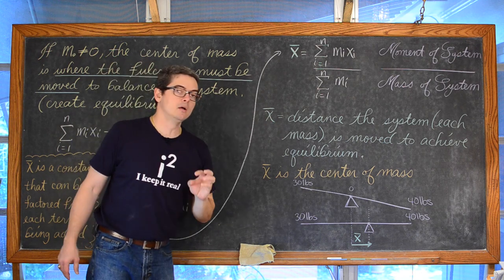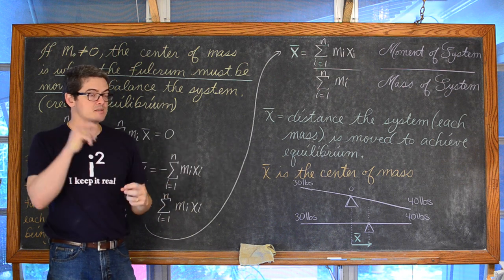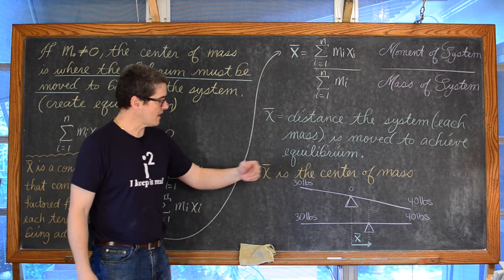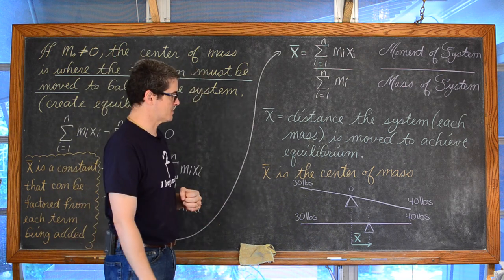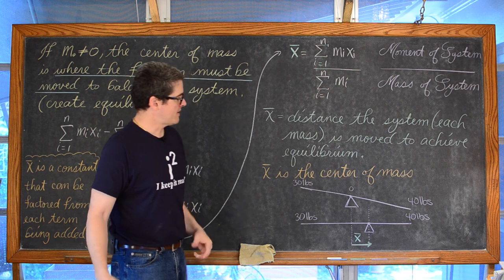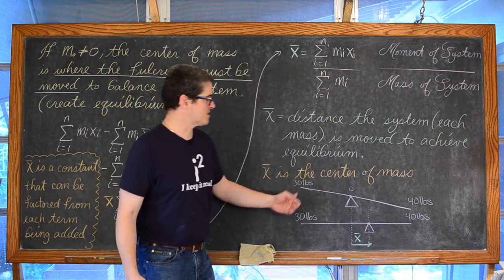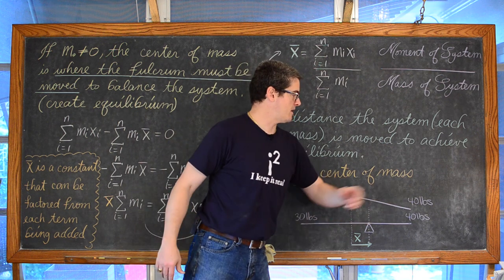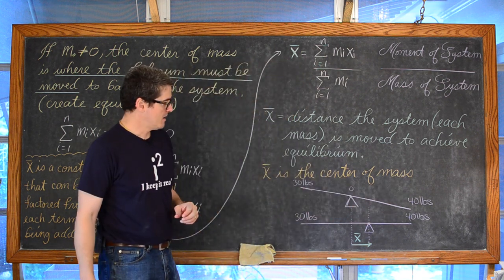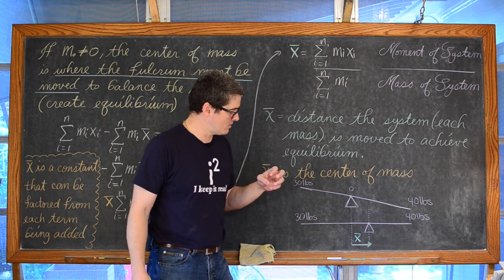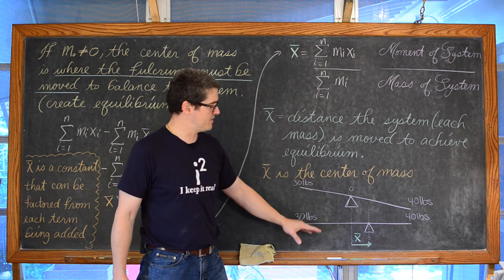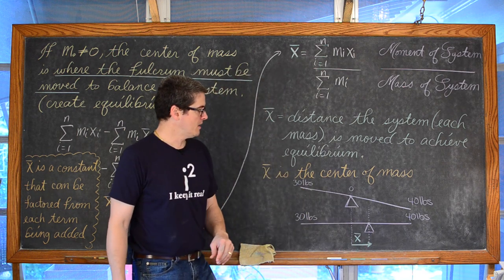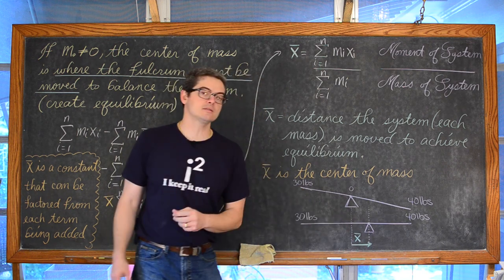X sub i is the distance each of those masses is away from the origin. Thus x-bar is going to be the location for the center of mass. So if we go back to that teeter-totter that is equal length on both sides, then your 30-pound child is going to be lifted up by the 40-pound child. In terms of these definitions and the idea of x-bar: where would the fulcrum have to get moved to create balance — that distance is x-bar.